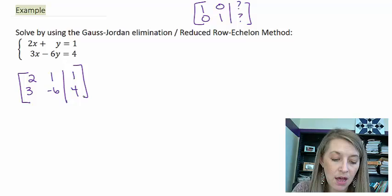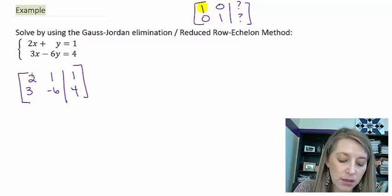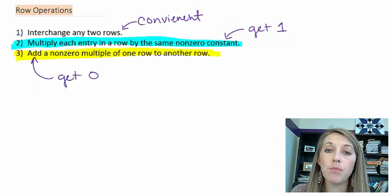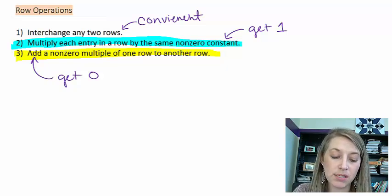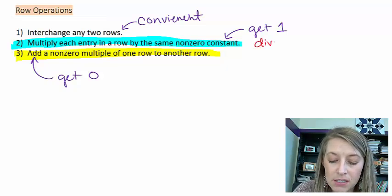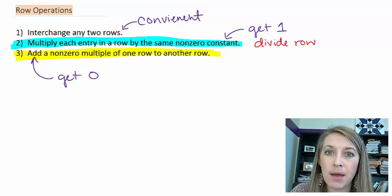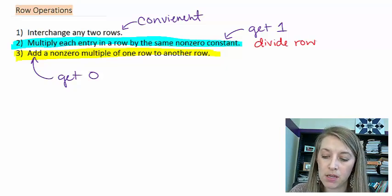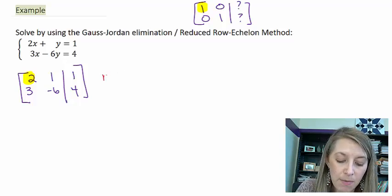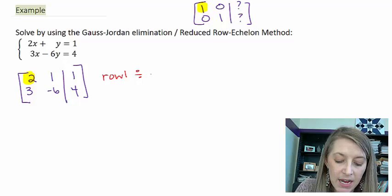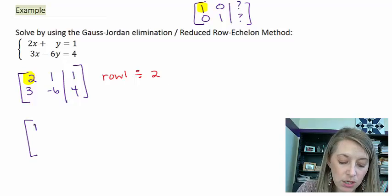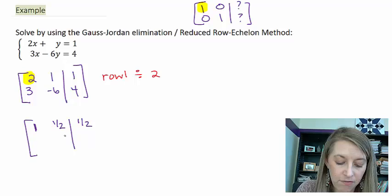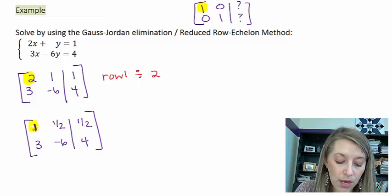My method of preference is to get a 1 on the top left where this 2 is. Most of the time to get a 1, I use option number 2. I multiply one row by a non-zero constant, which usually means that I divide that row by whatever number I'm trying to get rid of in front of my x. So in this example, that usually means I would take my row 1 and divide it by 2. If I did that, my 2 divided by 2 would give me 1, and then I would have 1 half here and 1 half there.